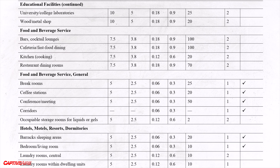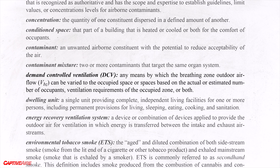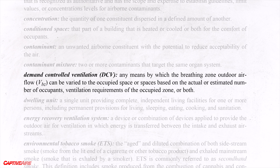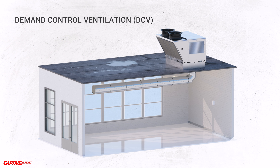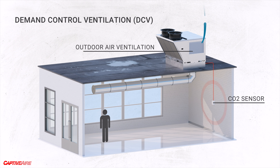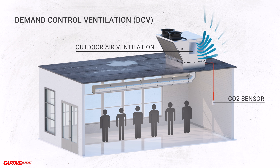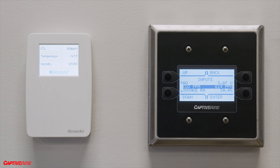In recent code adaptations, demand control ventilation (DCV) allows ventilation rates to change based on occupancy. The most common way is to place a CO2 sensor inside the space — the more people exhaling, the more carbon dioxide is added, and as CO2 levels rise the sensor triggers increased mechanical ventilation. The benefit is that a conference room only used for a few hours a day doesn't require paying for additional ventilation when people aren't actually occupying that space.